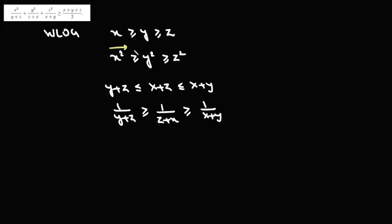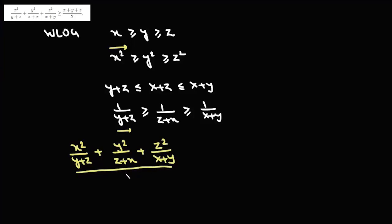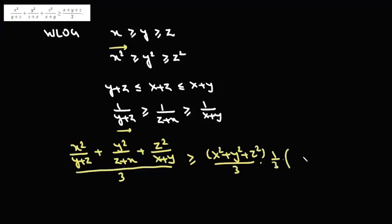These two sequences are in the same order, so using Chebyshev's inequality we can write: x squared upon y plus z, plus y squared upon z plus x, plus z squared upon x plus y, all divided by 3, is greater than or equal to x squared plus y squared plus z squared upon 3, times 1 by 3 times 1 upon y plus z plus 1 upon z plus x plus 1 upon x plus y.